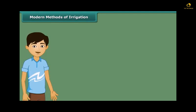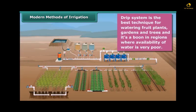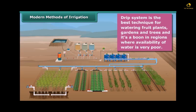Let us now know modern methods of irrigation. In the sprinkler system, perpendicular pipes with rotating nozzles on top are joined to a main pipeline at regular intervals. When water flows through the main pipe under pressure, it escapes from the rotating nozzles and gets sprinkled on the crop as if it is raining — most useful on uneven land where water is scarce. In the drip system, water falls drop by drop just at the position of the root. It is the best technique for fruit plants, gardens, and trees, and is a boon in regions where water availability is very poor.